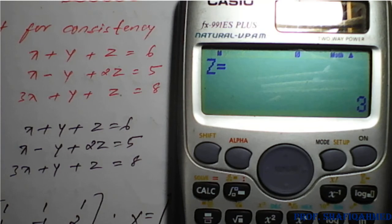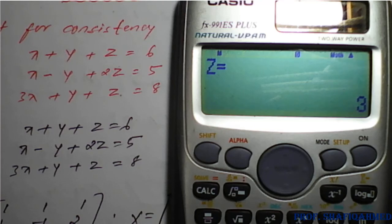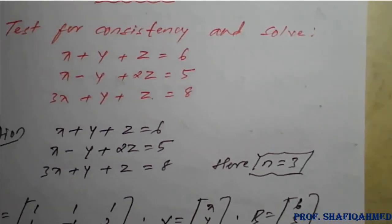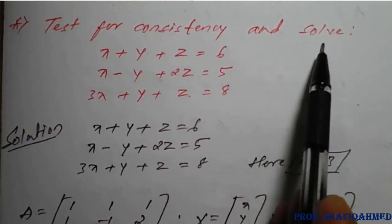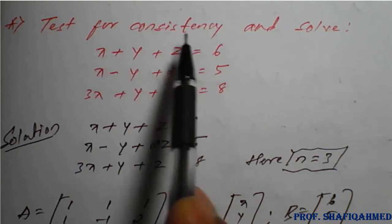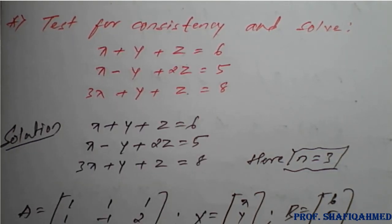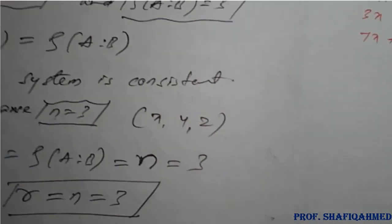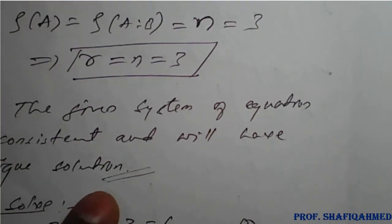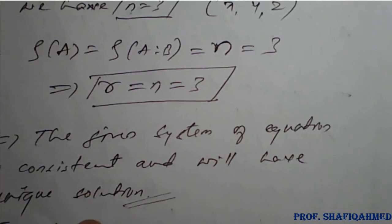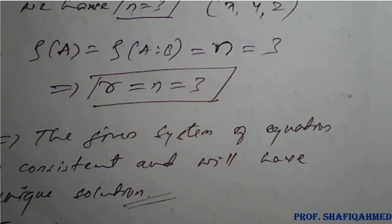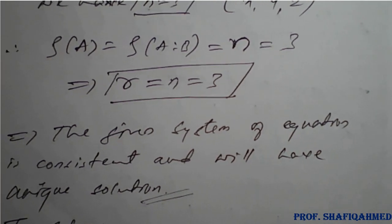Once all values are entered and you press equal, the calculator displays x equals 1, then y equals 2, then z equals 3, confirming our manual solution. Using the calculator we can verify the values of x, y, z. If the question asks only to test consistency, stop at the rank comparison stage; if it also asks to solve, find the values of x, y, z.